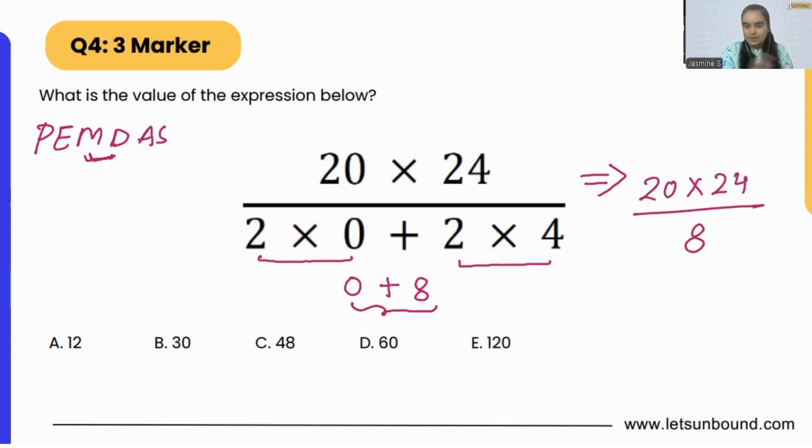Numerator, let's keep as it is: 20 times 24. Now you can apply two different ways to solve this question. In the first way, what I'm doing is I am crossing this 8 and 24.